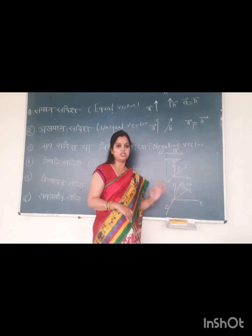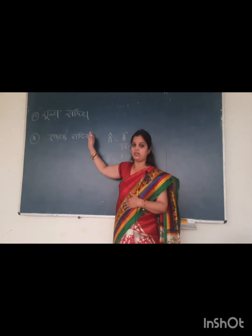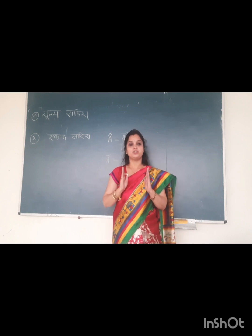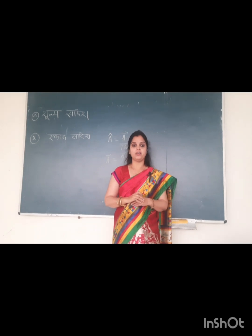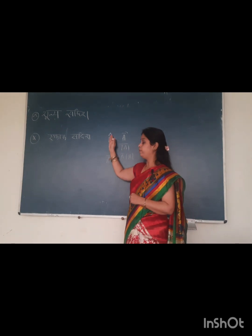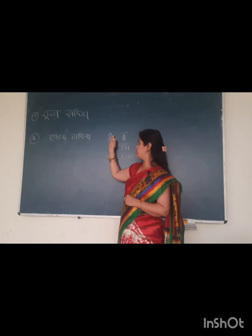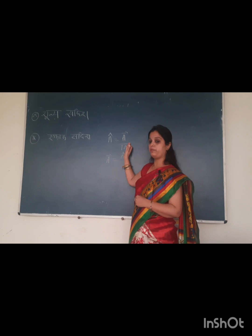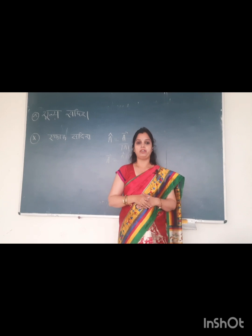The remaining types are zero vector (shoonya sadish) and unit vector (ekaan sadish). Zero vectors are those vectors whose modulus is zero. Unit vectors are those vectors whose modulus or magnitude is equal to one. To represent a unit vector, we put a cap (hat) symbol on top of the letter A — we call it A-cap. A-cap equals vector A upon the modulus of A. This equation can be rearranged to show that vector A equals A-cap multiplied by the modulus of A.